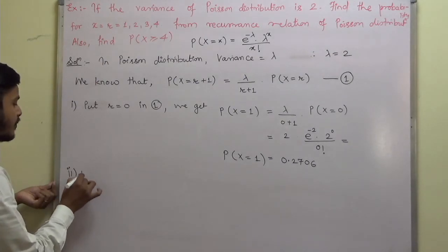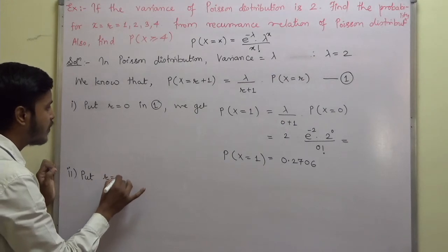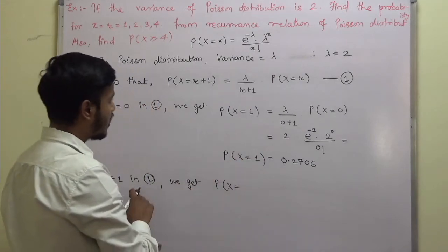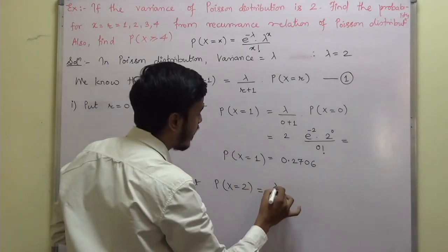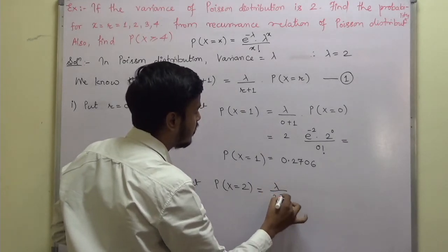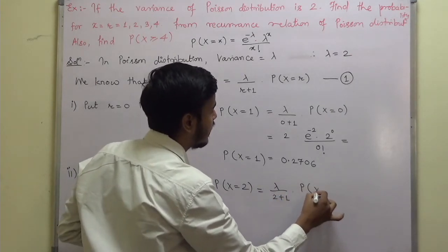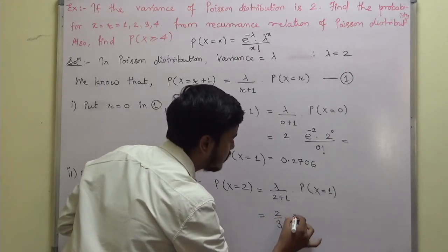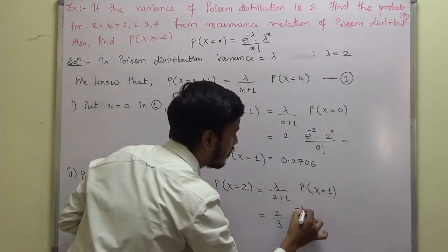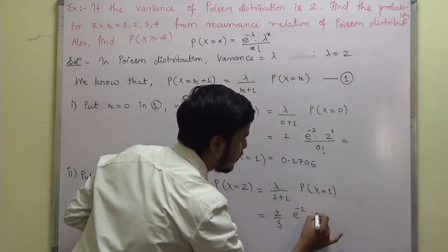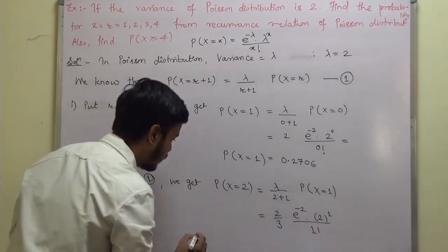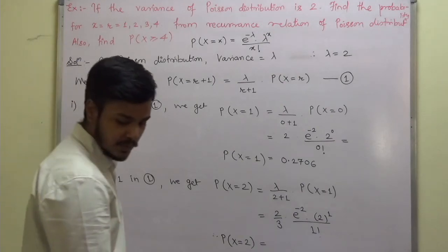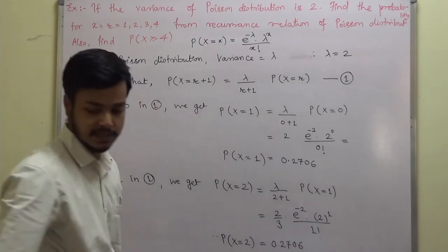To find P(X = 2), put r = 1 in the recurrence relation: P(X = 2) = lambda upon 2 into P(X = 1). Substituting lambda = 2 and P(X=1): this gives 2 by 2 into e to the power minus 2, 2 to the power 1 upon factorial 1, which comes out to be 0.2706.